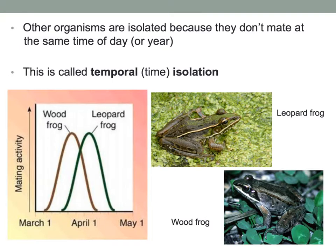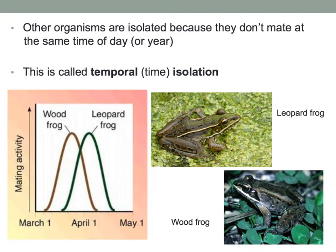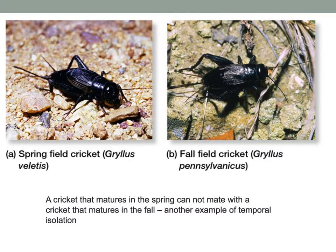The other type is temporal isolation — they are isolated in time. You have spring crickets and fall crickets; they are not going to mate because they're mating at different periods of time. Similarly, the wood frog prefers to mate in late March, while the leopard frog prefers to mate in mid-April. There is a small window where they could breed, but chances are they won't because they mate at different times.